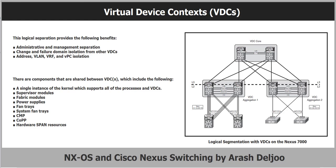Each VDC also maintains an individual high availability, or HA, policy that defines the action the system will take when a failure occurs within a VDC. Depending on the hardware configuration, various actions can be performed. In a single supervisor system, the VDC can be shut down, restarted, or the supervisor can be reloaded. In a redundant supervisor configuration, the VDC can be shut down, restarted, or a supervisor switchover can be initiated.